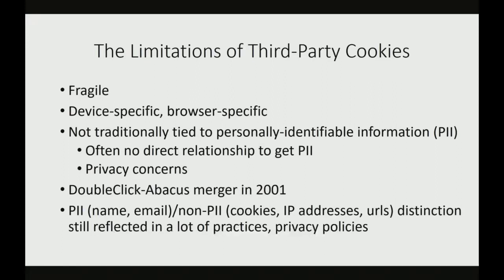A lot of people were concerned that DoubleClick was going to merge those databases and start watching what you do by real name. The FTC got involved and closed the case, saying they were closing it because DoubleClick promised they weren't going to merge the data sets and would keep it anonymous. For a lot of years the argument was, why care about this? It's always anonymous. That's obviously changed a lot in practice. But in a lot of privacy policies you still see this distinction: name and email we won't share, but cookies, IP, URL — that's totally fine. As we'll see in a bit, that distinction has broken down a lot.